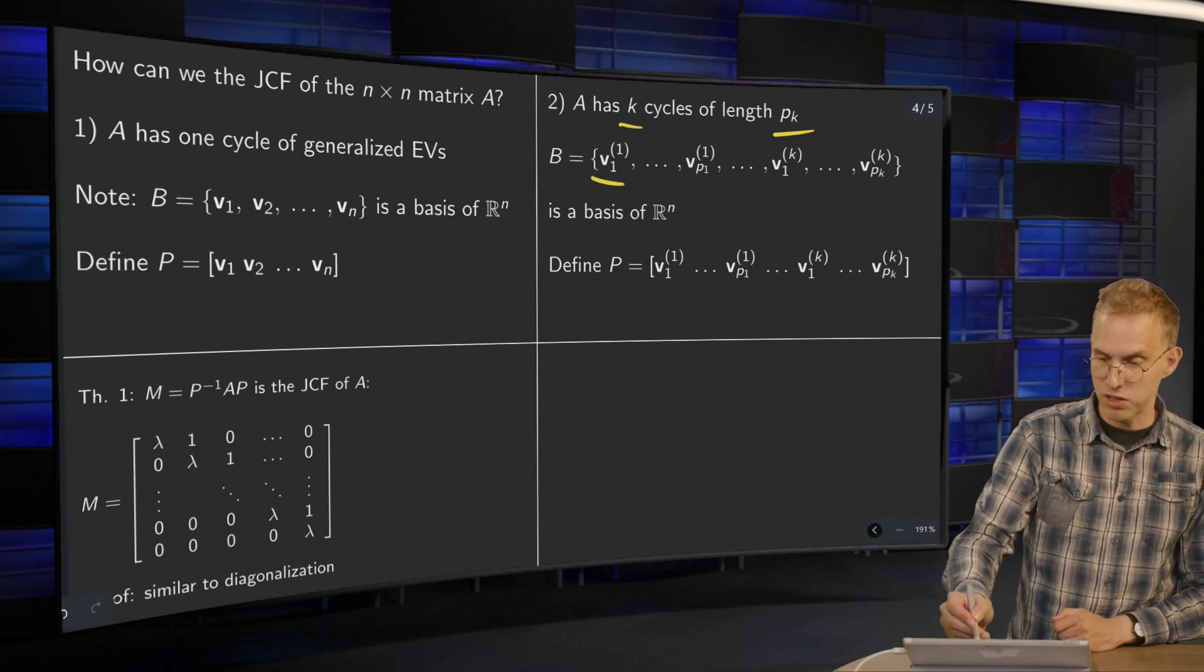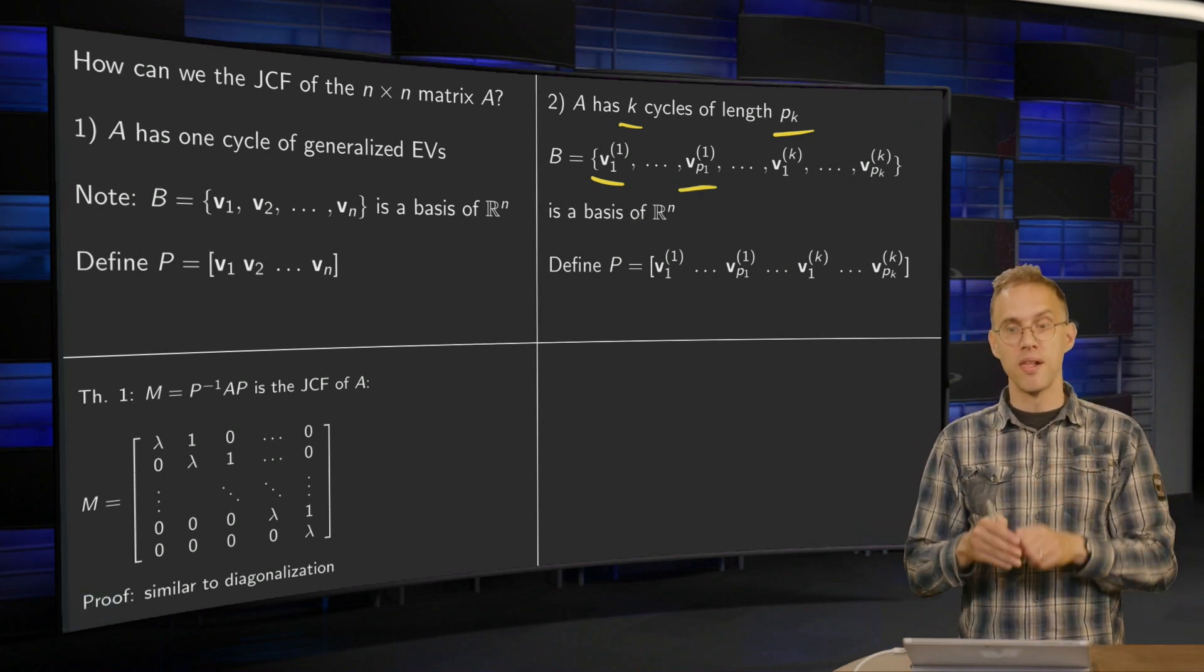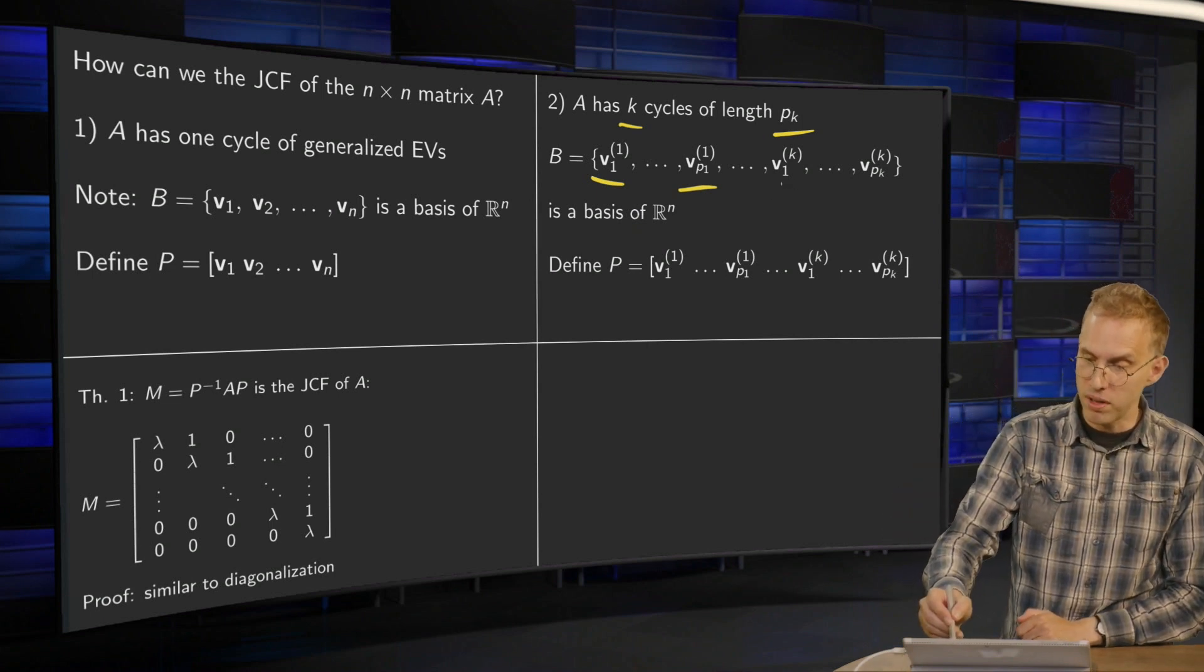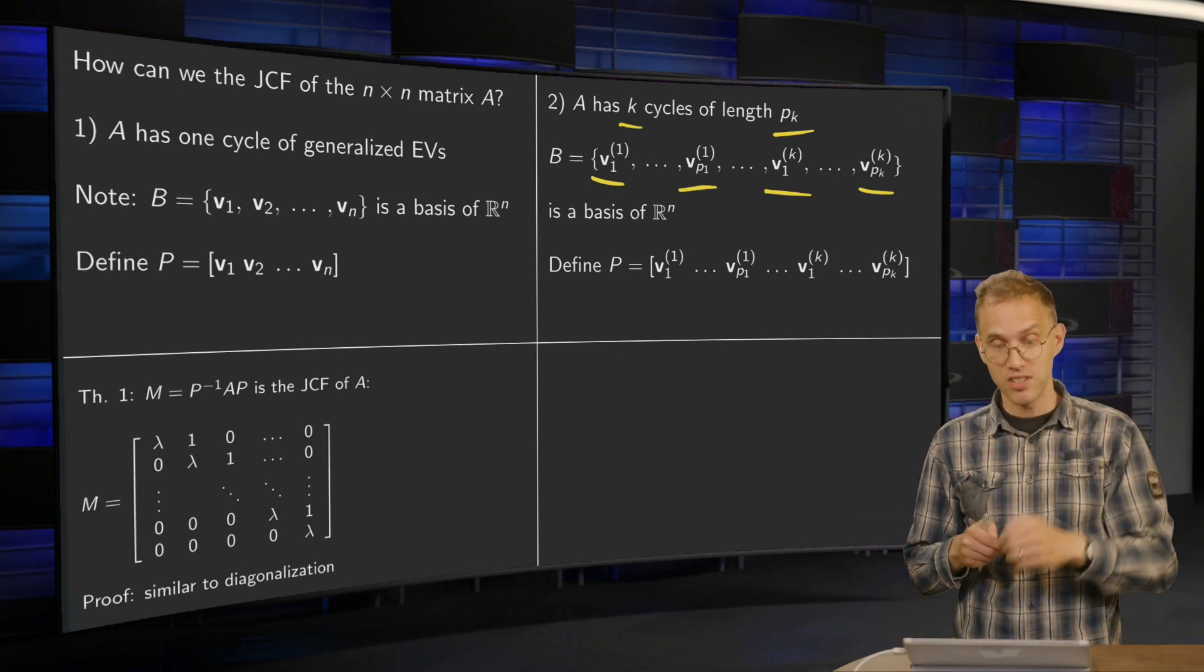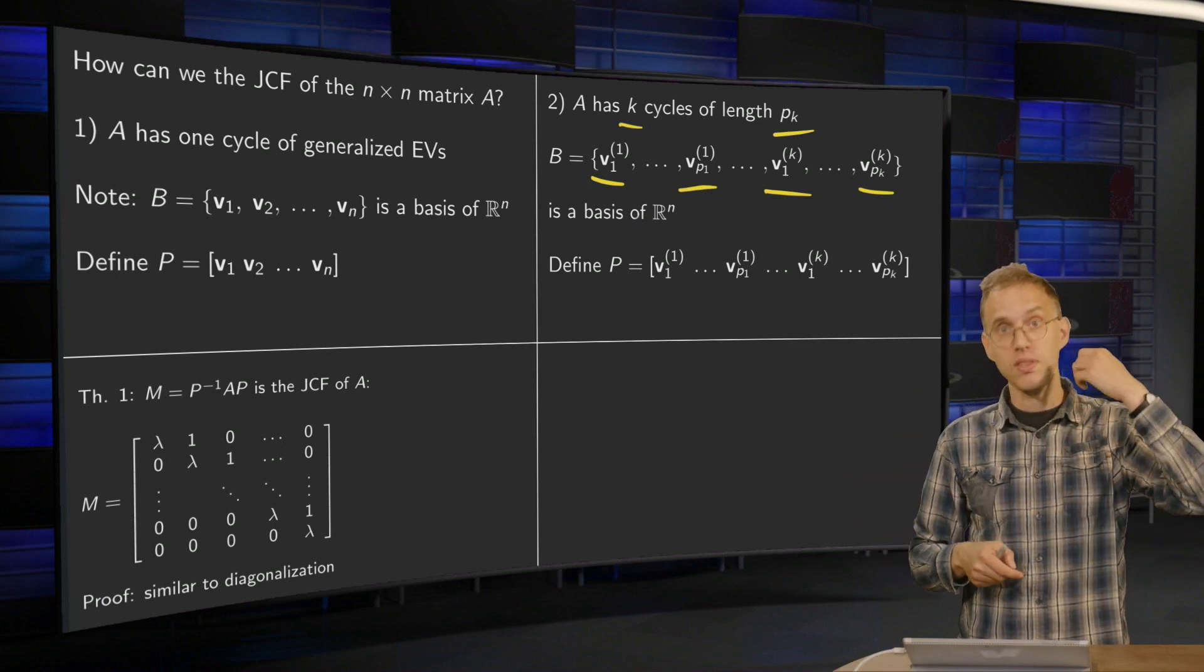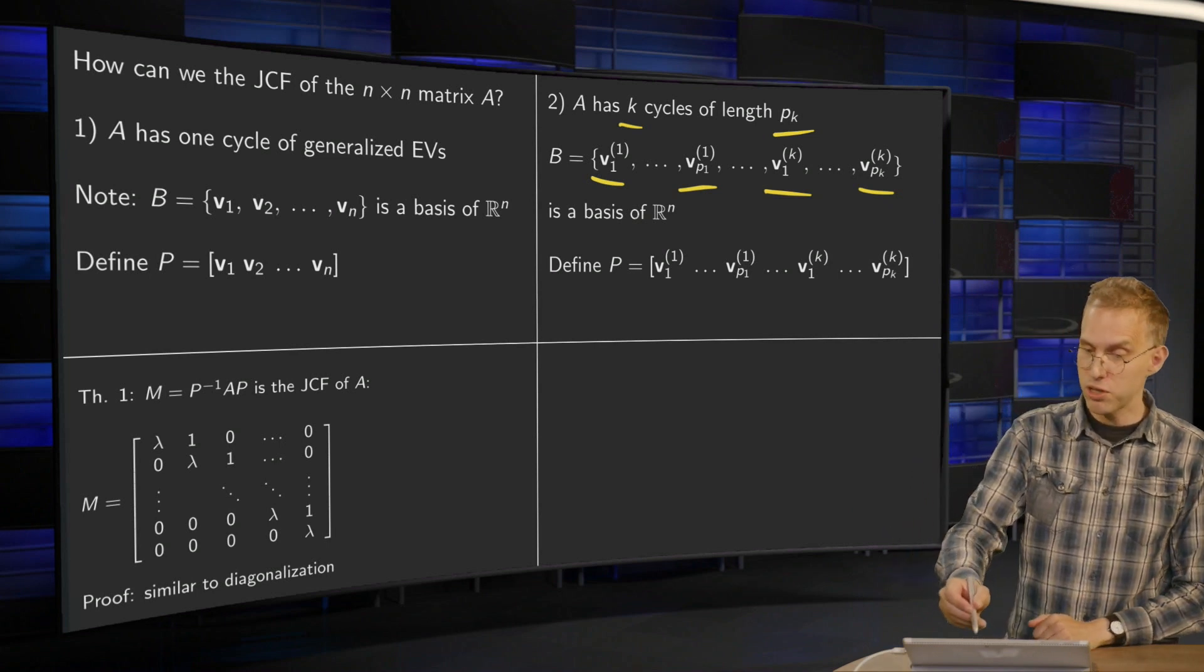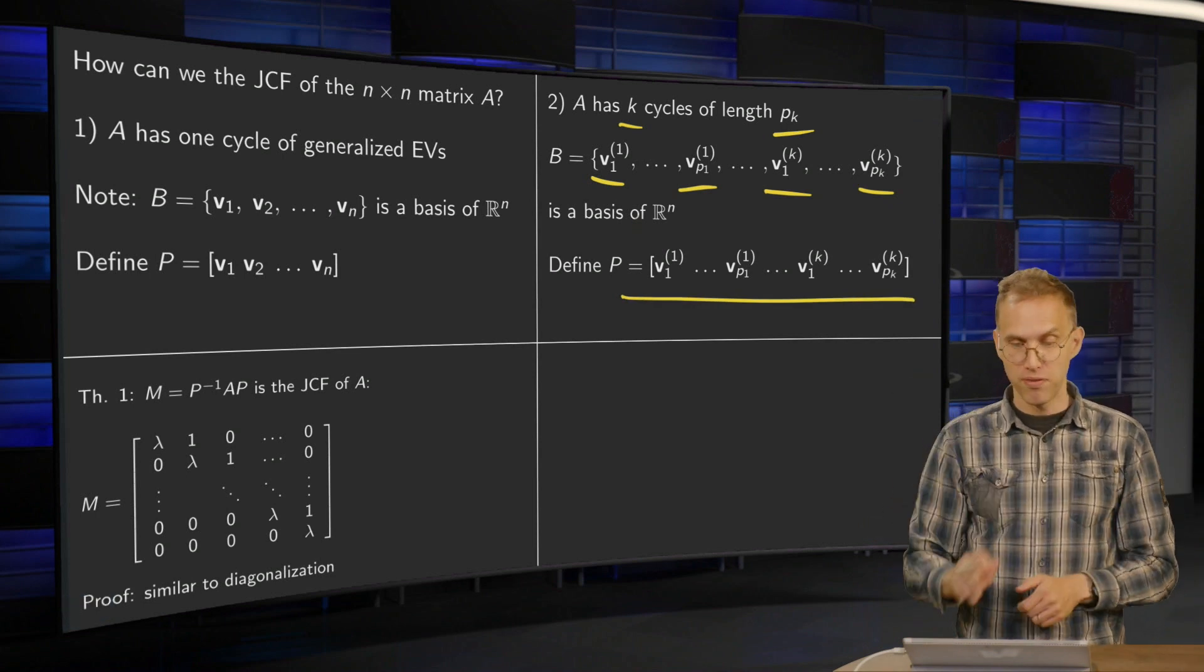First, generalized eigenvectors belonging to the first cycle: V1 up to V_ρ1. Then the generalized eigenvectors belonging to the second cycle, and so on, until you have your generalized eigenvectors belonging to the kth cycle. Those all together are independent, so together they form a basis of R^n. You just put all of them in a big matrix P, just as we did before.